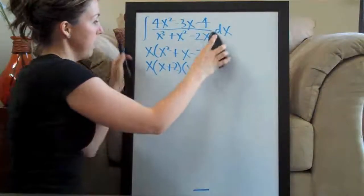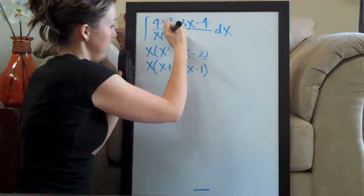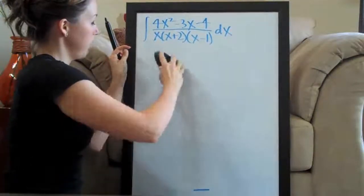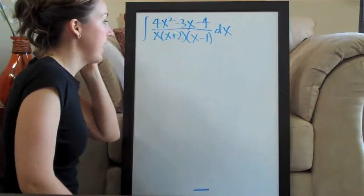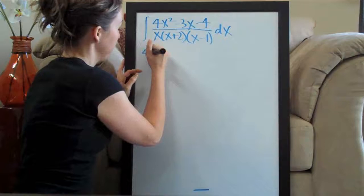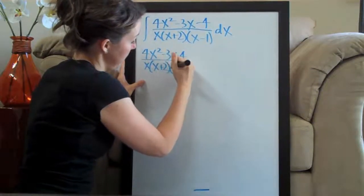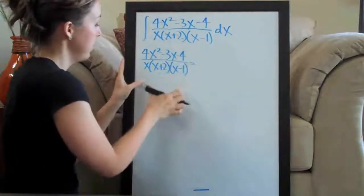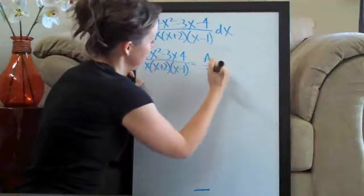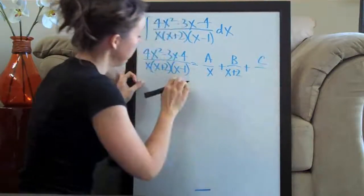Since it's going to be a long problem, I'll save some space by putting this back in up here: x times (x plus 2) times (x minus 1). Now that we have the factored denominator, we apply the partial fraction decomposition, which looks like this: (4x squared minus 3x minus 4) over [x(x+2)(x-1)] equals A over x, plus B over (x plus 2), plus C over (x minus 1).